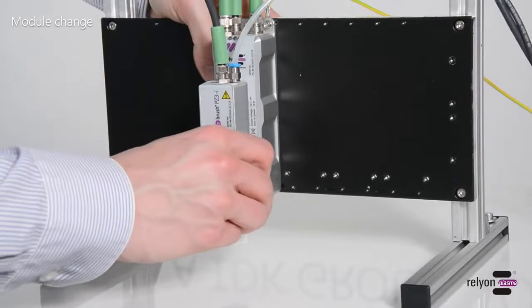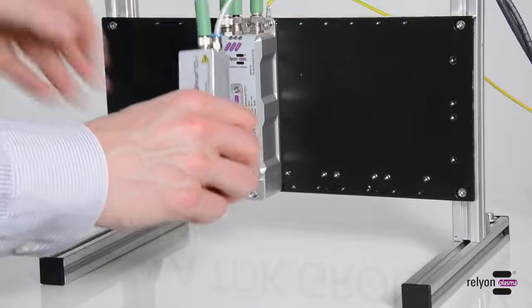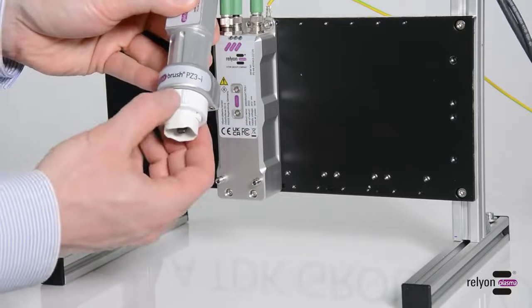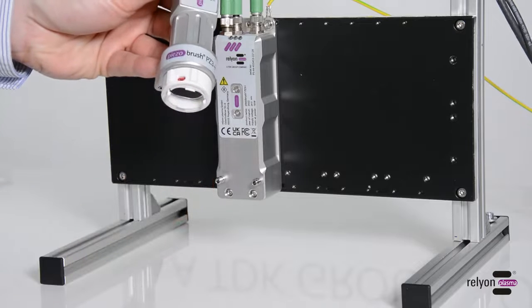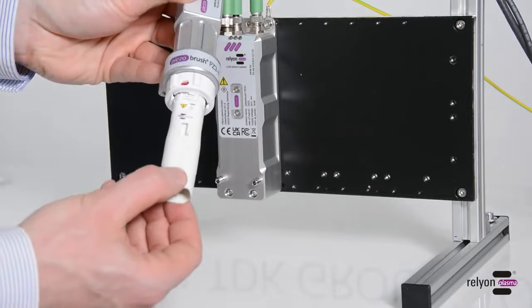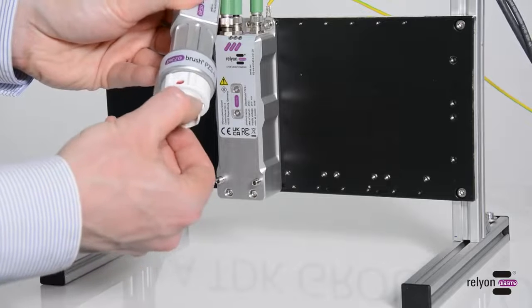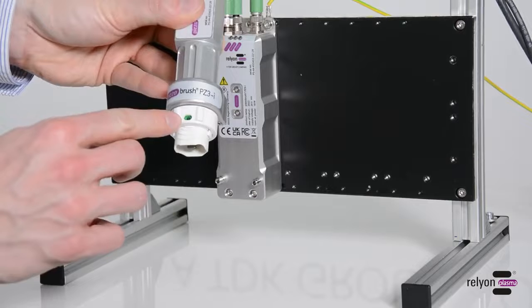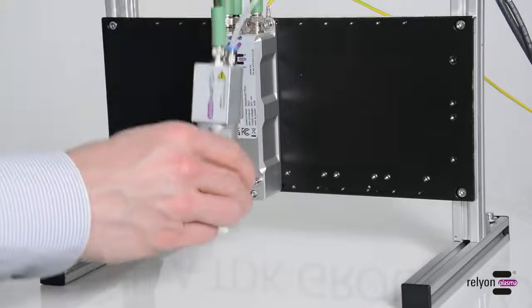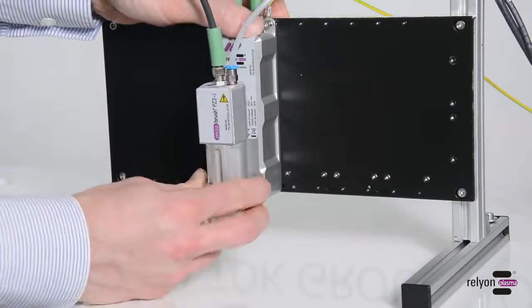The module can be changed easily and without tools. If there is not enough space under the module for a change, you can remove the entire module carrier, loosen the locking ring, insert the new module, and close the locking ring again. In this state, you can put the module carrier back on and the device is ready for operation again.